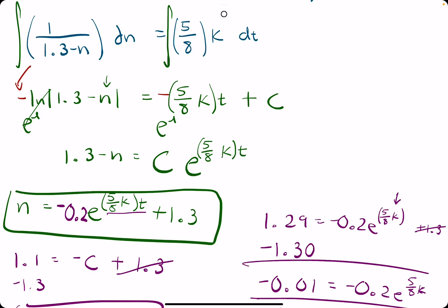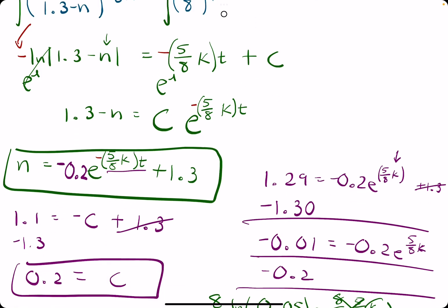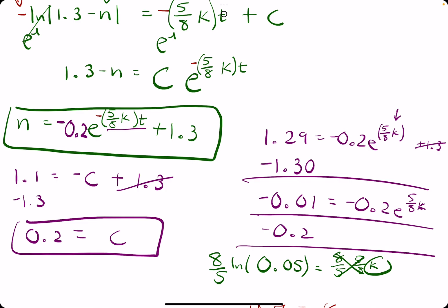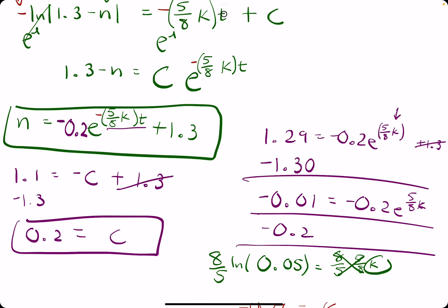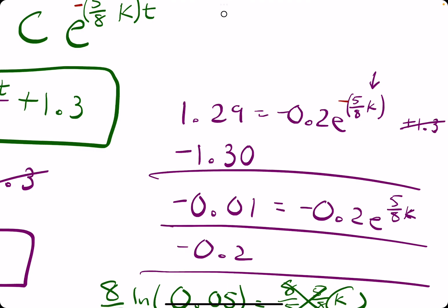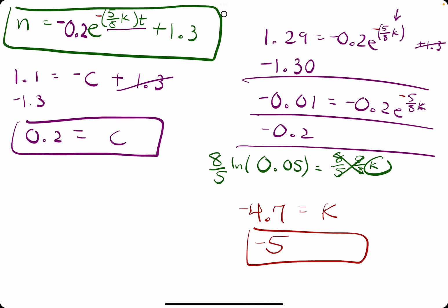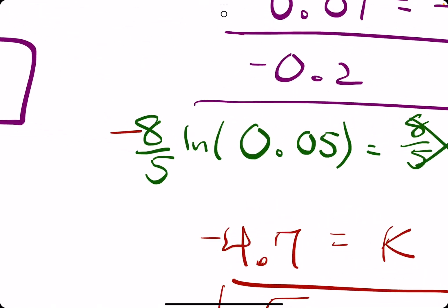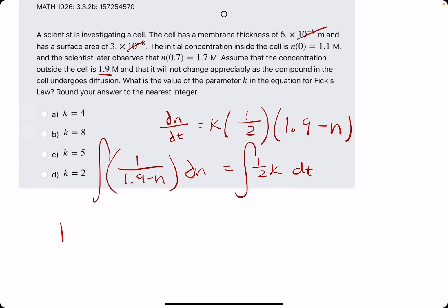So, there should have been a negative here, which would have had a negative here, which wouldn't have affected our c. Our c still would have been that. But, really, it would have made that negative 5 eighths k the whole way down. So, we would have multiplied just by a negative 8 fifths. So, negative 4.7, giving us a positive 5. So, we did do that right. Let's just do it the same way here.